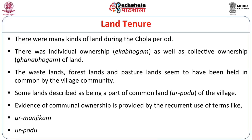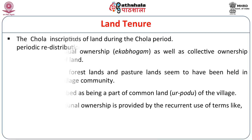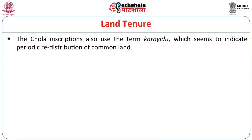There are large numbers of evidences in inscriptions of communal ownership, provided by the frequent use of terms like Urmanjikam and Urpudu, meaning the common land of the village. The Chola inscriptions also use the term Karayudu, which seems to indicate the periodic redistribution of common land at the village level.